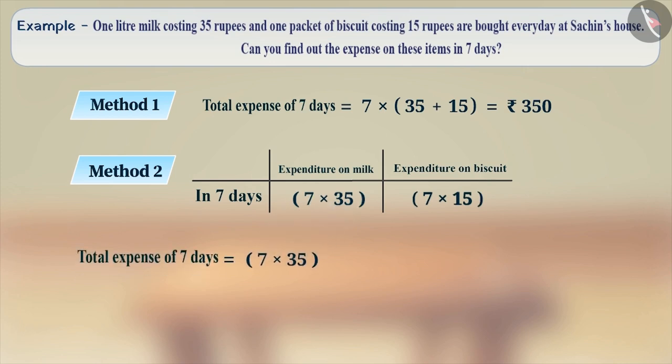Total expenditure is equal to 7 into 35 plus 7 into 15, which is equal to 245 plus 105, which is equal to 350.